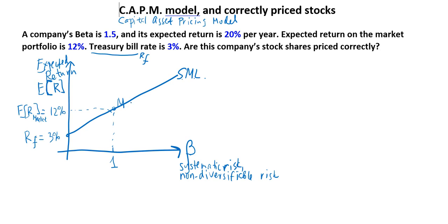The SML goes up and to the right, meaning there is a positive relationship between the amount of systematic risk you have no control over and the amount of return that investors should expect when they buy shares of that company's stock. Any company would have a different combination of risk and return, but all of them would lie on this Security Market Line. If they do, then whatever the price per share is, that's the correct price per share. So all stocks lying on this line are priced correctly.